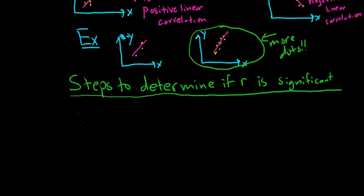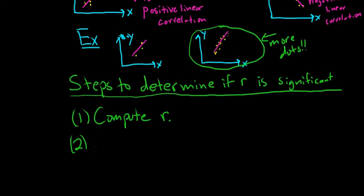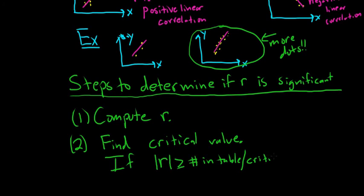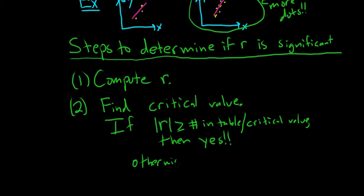Step one: compute r. We're going to use software — specifically StatCrunch. You plug everything in, hit a button, and it gives you r. Step two: find the critical value. There's a table; it's easy to look up. Step three: if the absolute value of r is bigger than the critical value — the number in the table — then yes, r is significant and you have a straight line pattern. Otherwise, no.